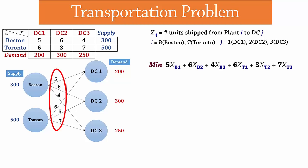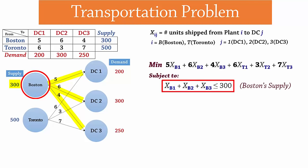For the constraints, we need to write 1 for every node. For Boston's supply, the total amount shipped to the 3 destination centers cannot exceed Boston's capacity, which is 300. So we write, XB1 plus XB2 plus XB3 is less or equal to 300.